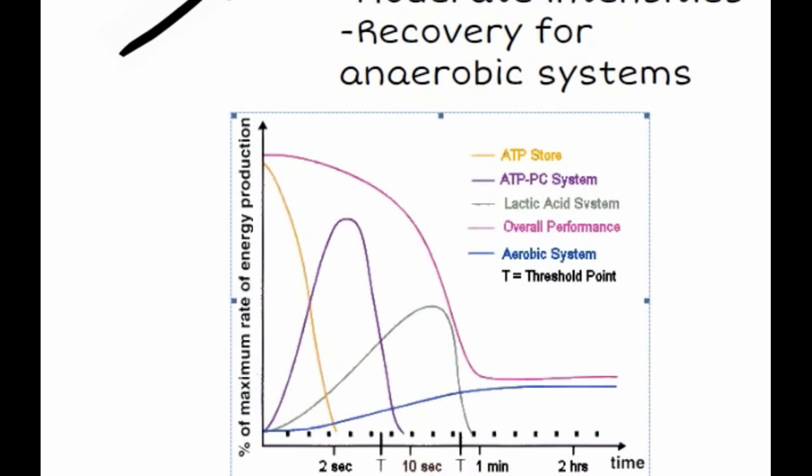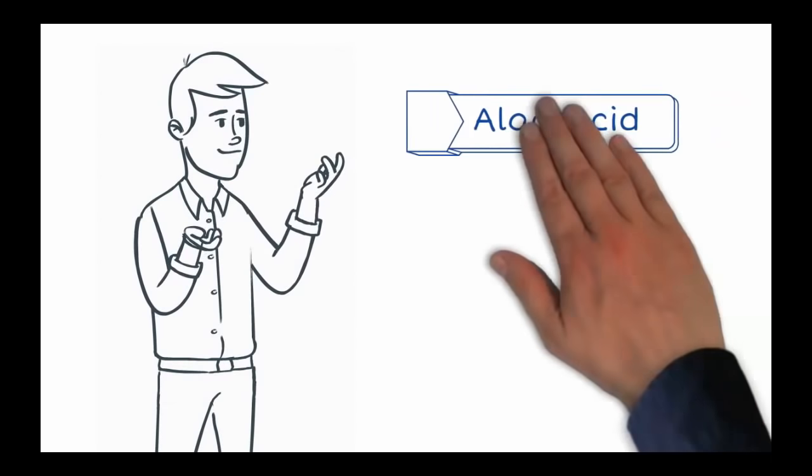Again, once you switch down to jogging at a lower intensity, that's allowing your lactic acid system to recover for the pyruvic acid and the hydrogen ions to be gotten rid of, so that system is ready to go again when you require it later on in the sport.